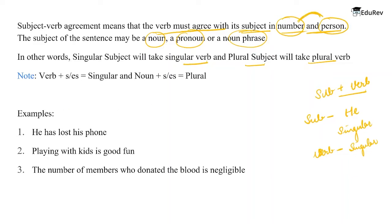Note this important rule: a verb plus S or ES equals singular, whereas a noun plus S or ES equals plural. This means that verbs ending with S are considered to be singular. Any verb that has an S is considered singular.